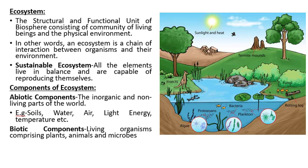Next is ecosystem. Ecosystem is a chain of interaction between organisms and their environment. It is the structural and functional unit of biosphere which consists of a community of living beings and the physical environment. The components of ecosystem — first is the abiotic components which include soil, water, light energy, and temperature, which are inorganic and non-living in nature.